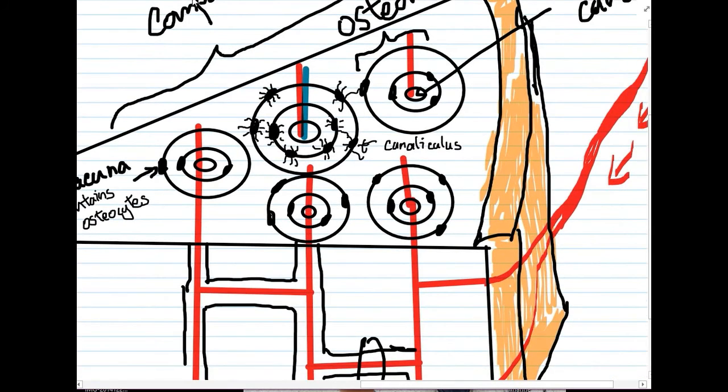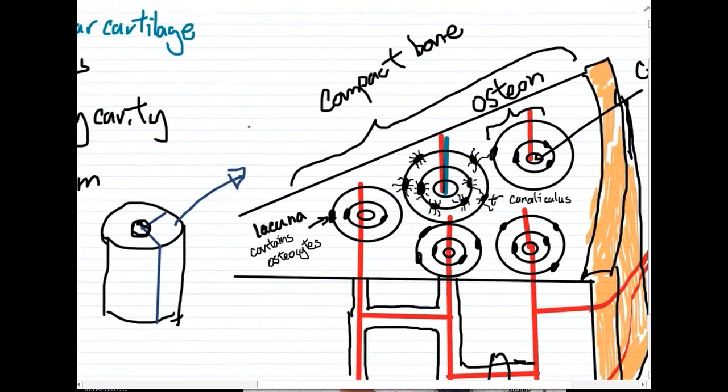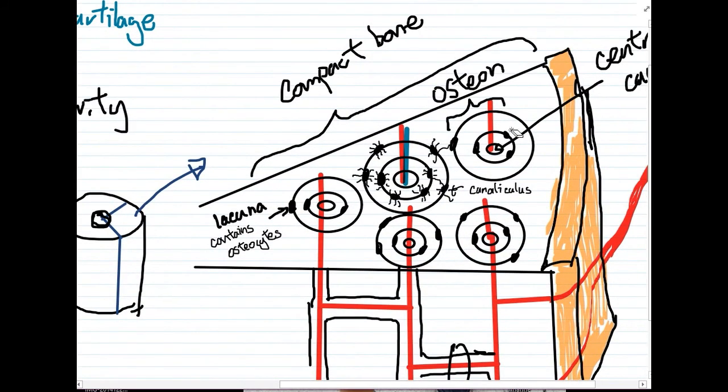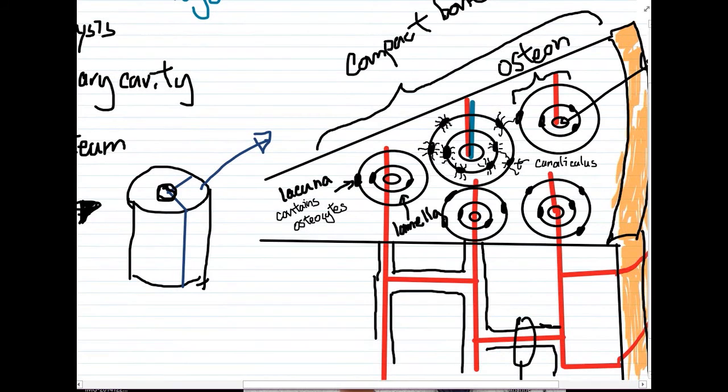Now, that's pretty much the key features of the osteon. The only thing that's remaining is the actual calcified matrix that I have been talking about and haven't been giving a name to. And so, this white space, they are called the lamella. And again, lamella is nothing more than various salts of calcium as well as phosphate. And they are maintained by the osteocytes that are within the lacuna.